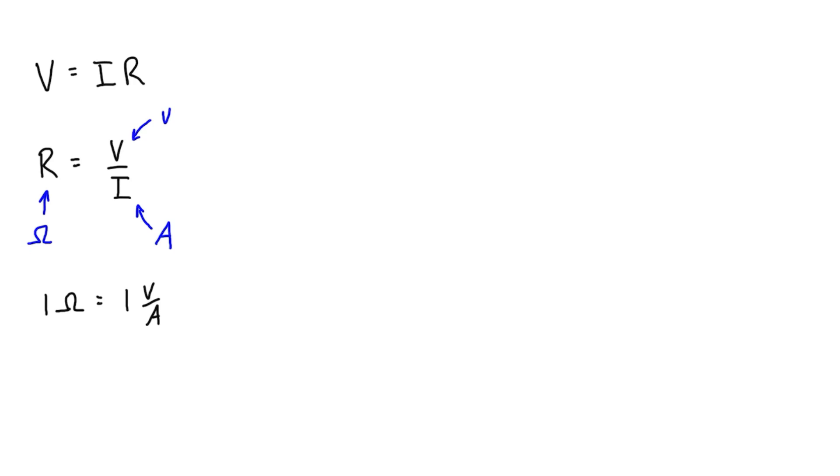So typically we talk about materials as conductors if they have a very low resistance, and we talk about insulators being materials that have a very high resistance. On the extreme end of things, a short circuit would be considered basically zero resistance or zero ohms, and an open circuit would be considered to have like an infinite resistance.